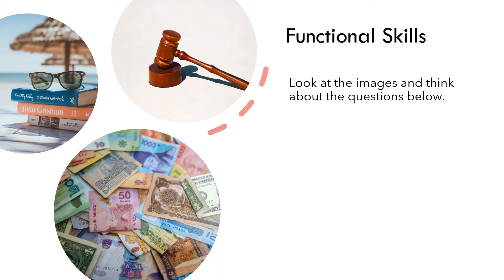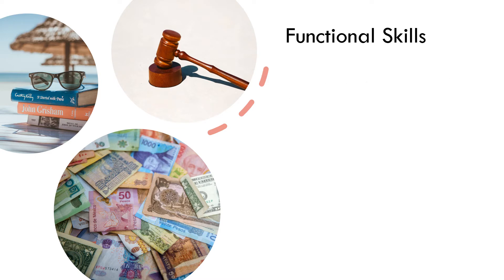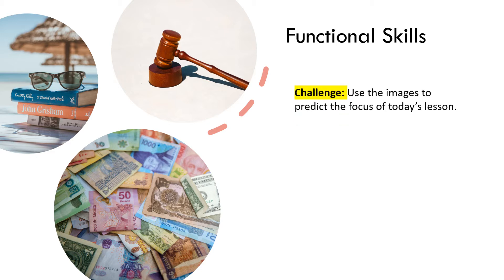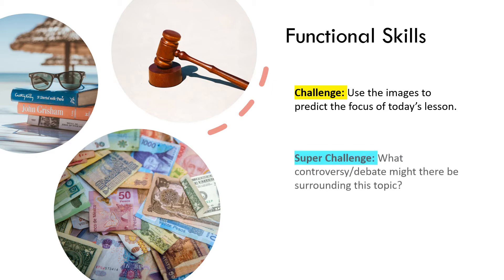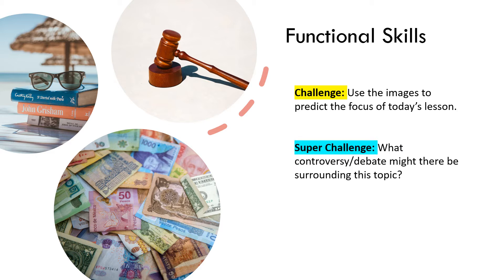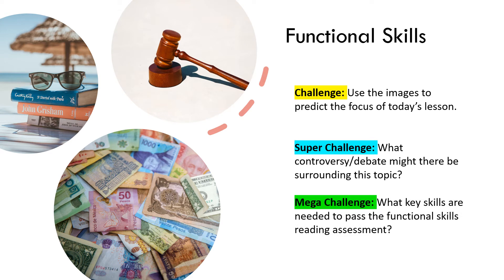Look at the images below and think about the questions that follow. You can see there are three images: one with an actual book, some sunglasses, some money, and a gavel which is normally used for law. Use the images to predict the focus of today's video. Super challenge: what controversy or debate might there be surrounding this topic, and what key skills are needed to pass the Functional Skills Reading Assessment?